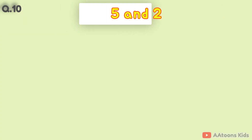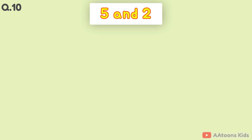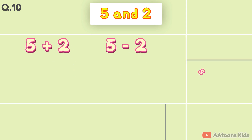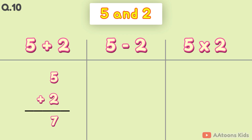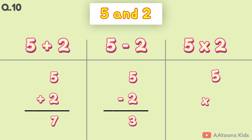The two numbers are 5 and 2. 5 plus 2 is 7. 5 minus 2 is 3. 5 times 2 is 10.